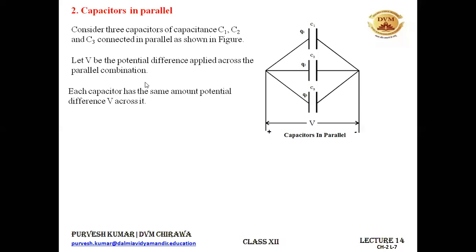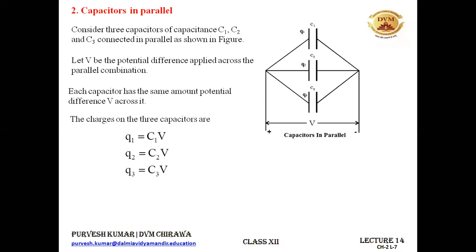Consider three capacitors C1, C2, and C3 connected in parallel. V is the potential difference applied, and it is the same across all three capacitors. The charges Q1, Q2, and Q3 on the capacitors are given by Q = CV, so Q1 = C1V, Q2 = C2V, and Q3 = C3V.